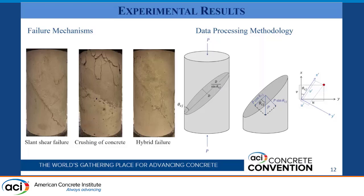We divide the ultimate capacity into two force components: the normal force acting on the interface and the shear force acting along the interface, which is resisted by the applied load times the cosine of theta_CJ — where theta_CJ is the angle measured from the vertical to the cold joint.